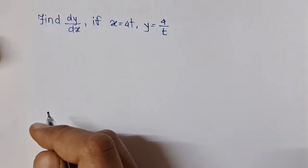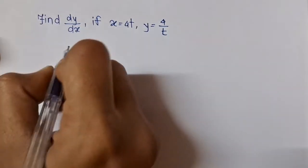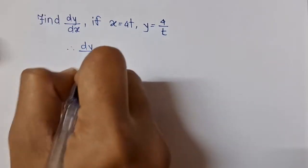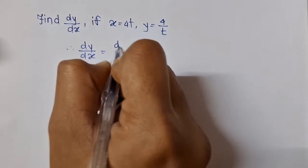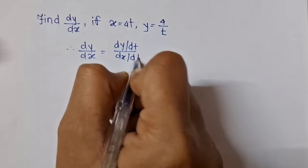As there is no direct correlation between x and y, in previous videos we have seen that we can find this by evaluating dy/dx = (dy/dt)/(dx/dt).